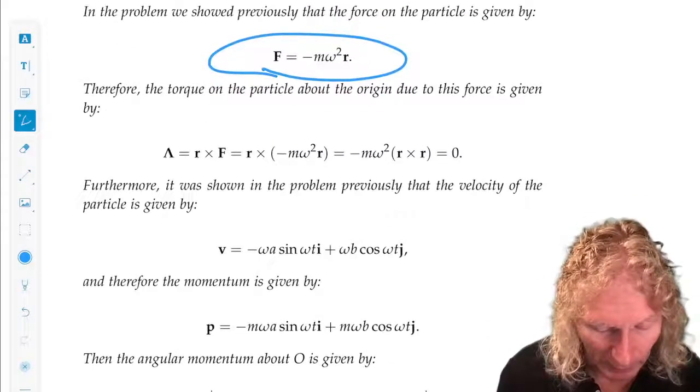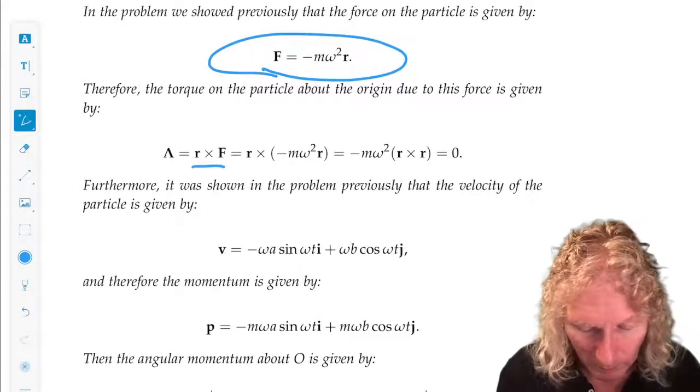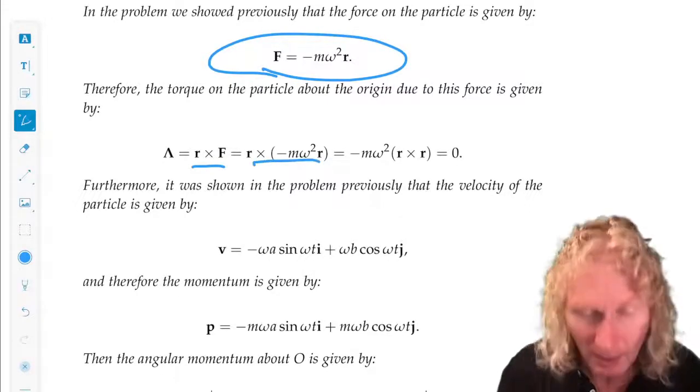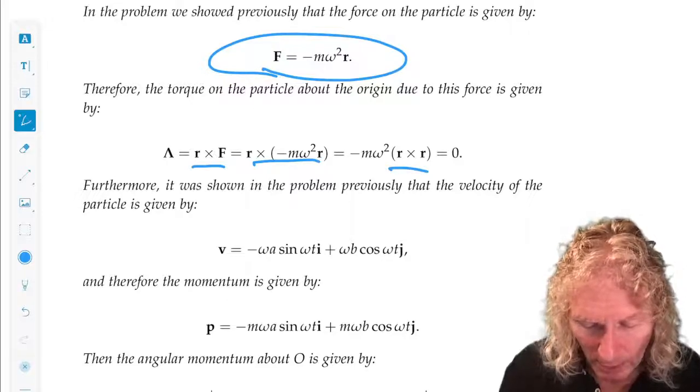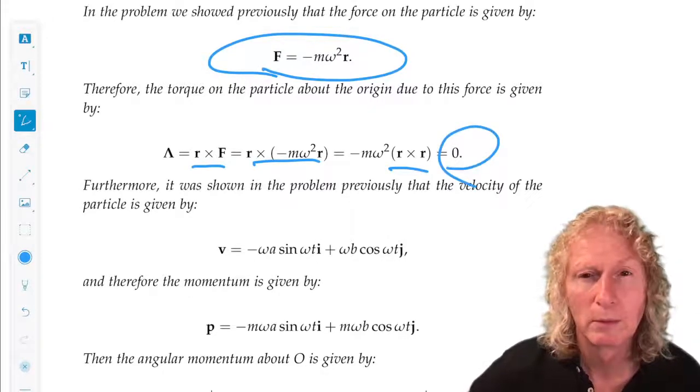We've already computed the force on this particle moving along this ellipse. Then all we need to compute is r cross f. That's easy because m and omega are constants, we can pull them out. We just have r cross r. So torque is zero.